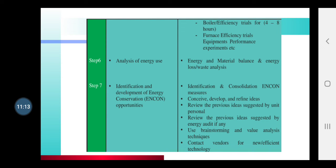Step six: Analysis of energy use — you have to analyze where your energy is being used and where it is being wasted or lost. Then make a chart for energy and material balance. The appliances are your material — check how they use energy, then create a balance sheet so that you can analyze where the energy usage is and where the waste is.